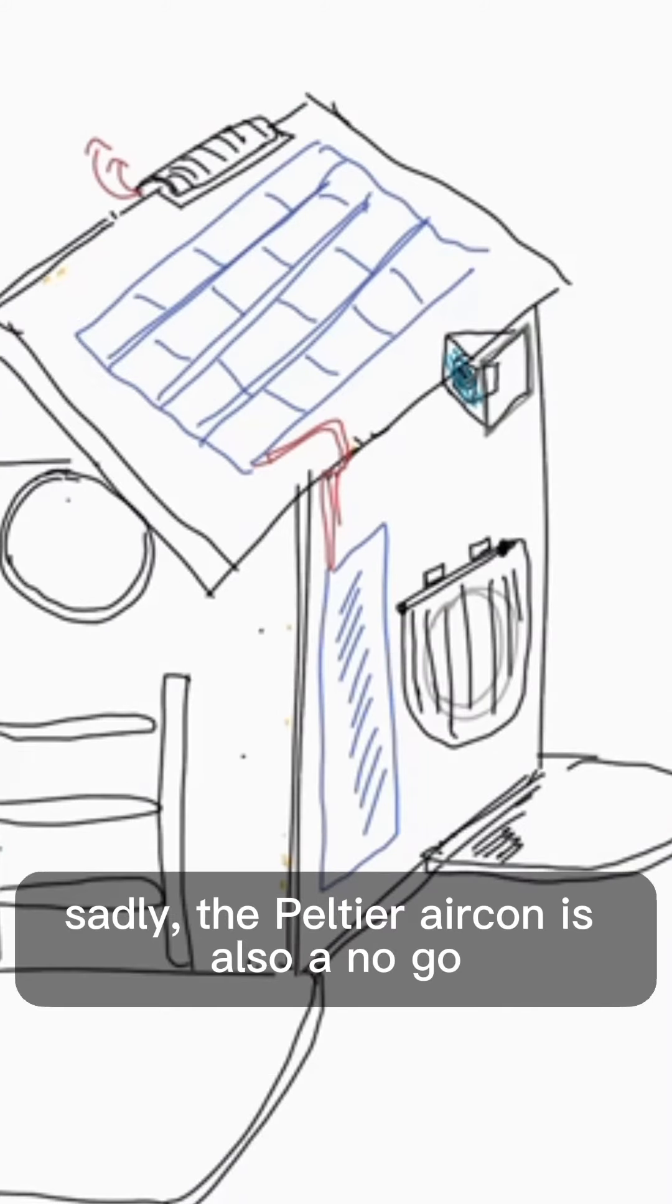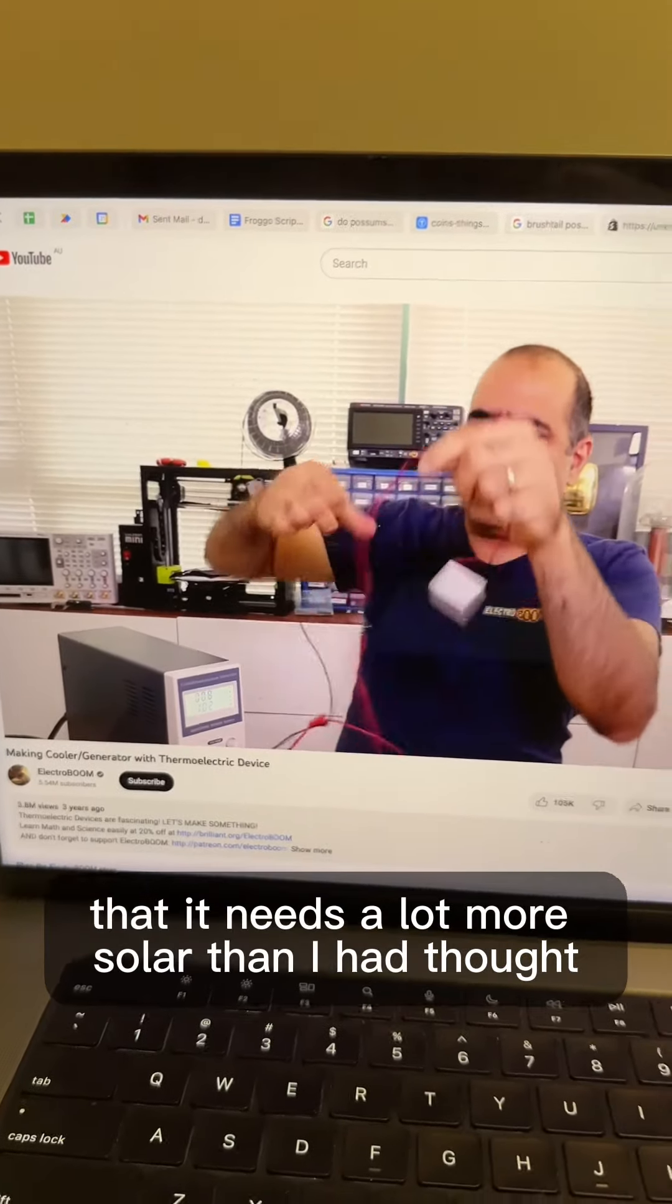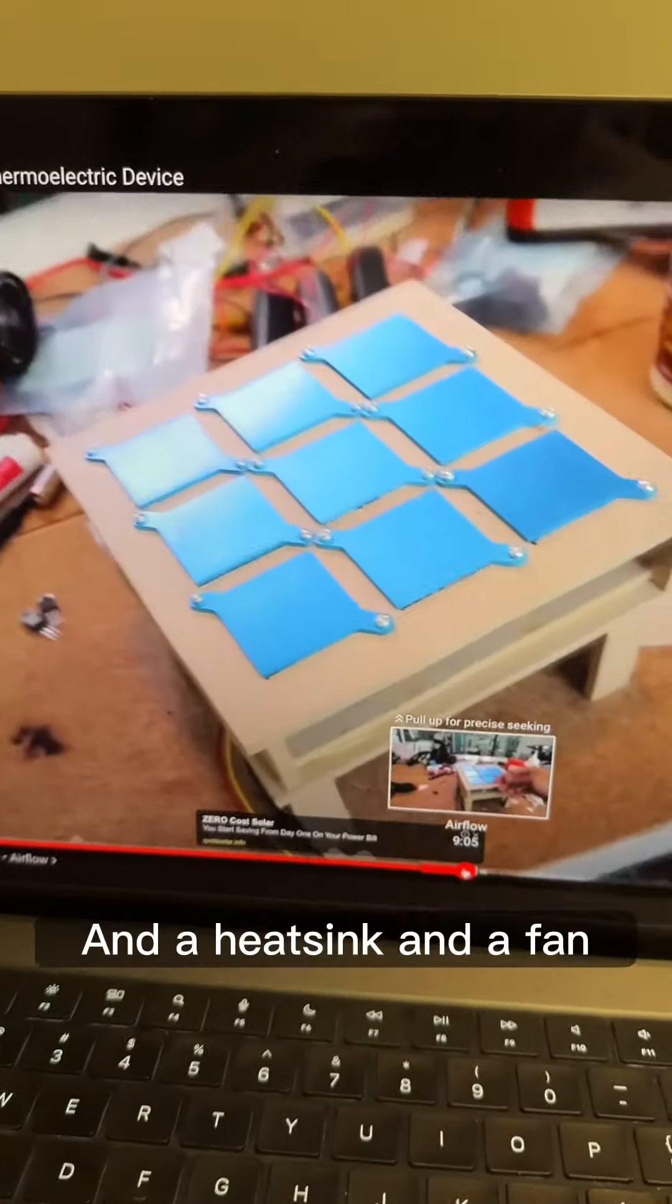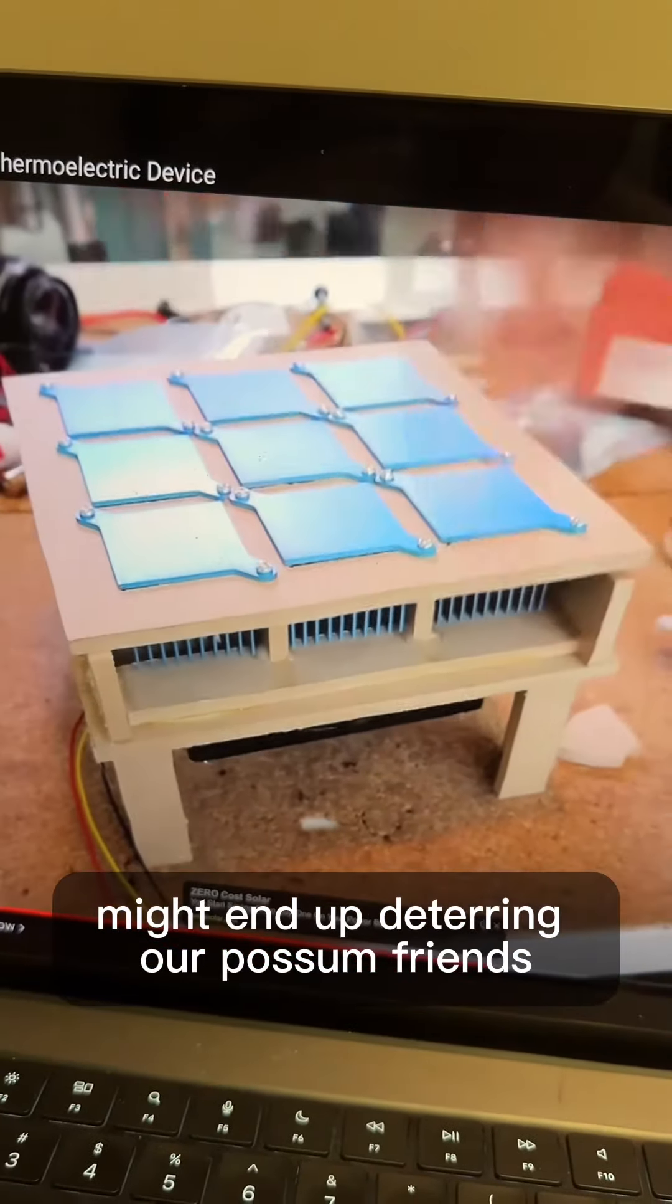Sadly, the Peltier aircon is also a no-go. Research shows that it needs a lot more solar than I had thought, and a heatsink and a fan. The noise and vibration from the fan might end up deterring our possum friends.